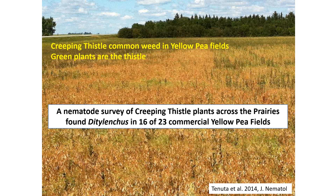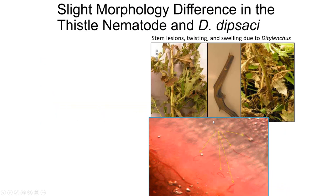Particularly in Manitoba and Alberta we found a lot of it on thistle — even now, if we want this nematode, we just go find creeping thistle in road ditches and it will be there. Here's what it does to creeping thistle: there's a stem piece that's twisted and swollen, damage to the leaves with browning and dying, and lesions on the stems. We can even stain the stem and see the nematode inside — these little pink things are the nematode living within the stem of the creeping thistle.